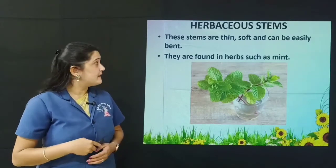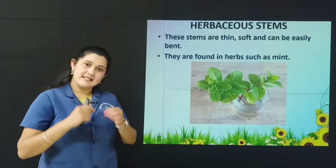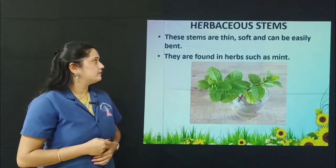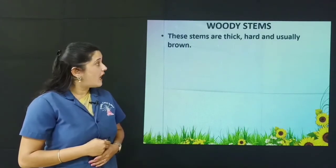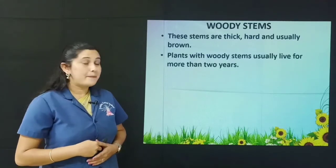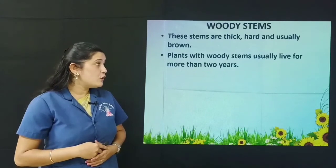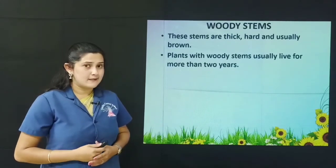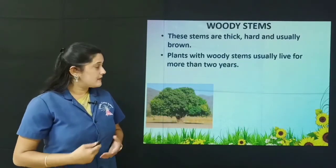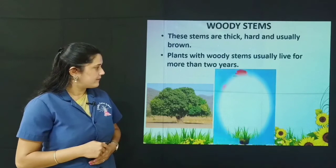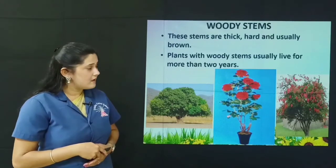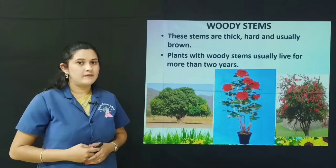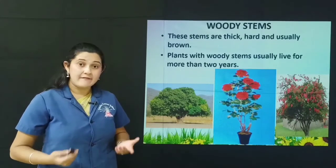Here is the picture of mint — this is an example of a herbaceous stem. You can see the stem is thin, soft, and can be easily bent. Next are woody stems. These stems are thick, hard, and usually brown. Plants with woody stems usually live for more than two years. Examples are mango tree, rose plant, and hibiscus plant.